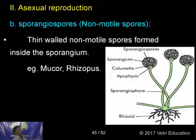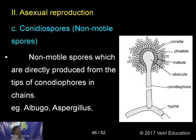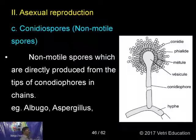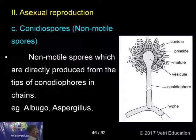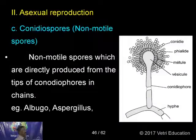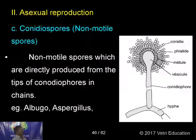The third asexual method is conidiospores — also non-motile spores which are directly produced from the tips of conidiophores. The conidiophore is a lengthy hypha bearing a rounded vesicular structure from which chains of conidia are formed. They may be removed, find a suitable substratum, and develop into that particular fungus. This type of conidia are formed in Albugo, Aspergillus, Penicillium, etc.